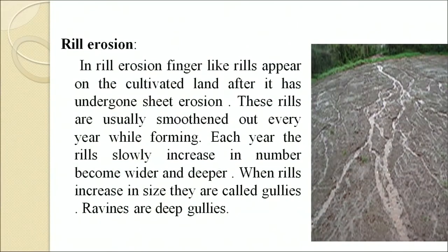In rill erosion, finger-like rills appear on cultivated land after it has undergone sheet erosion. These rills are usually smoothed out every year while forming. Each year the rills slowly increase in number, become wider and deeper. When rills increase in size they are called gullies. Ravines are deep gullies.